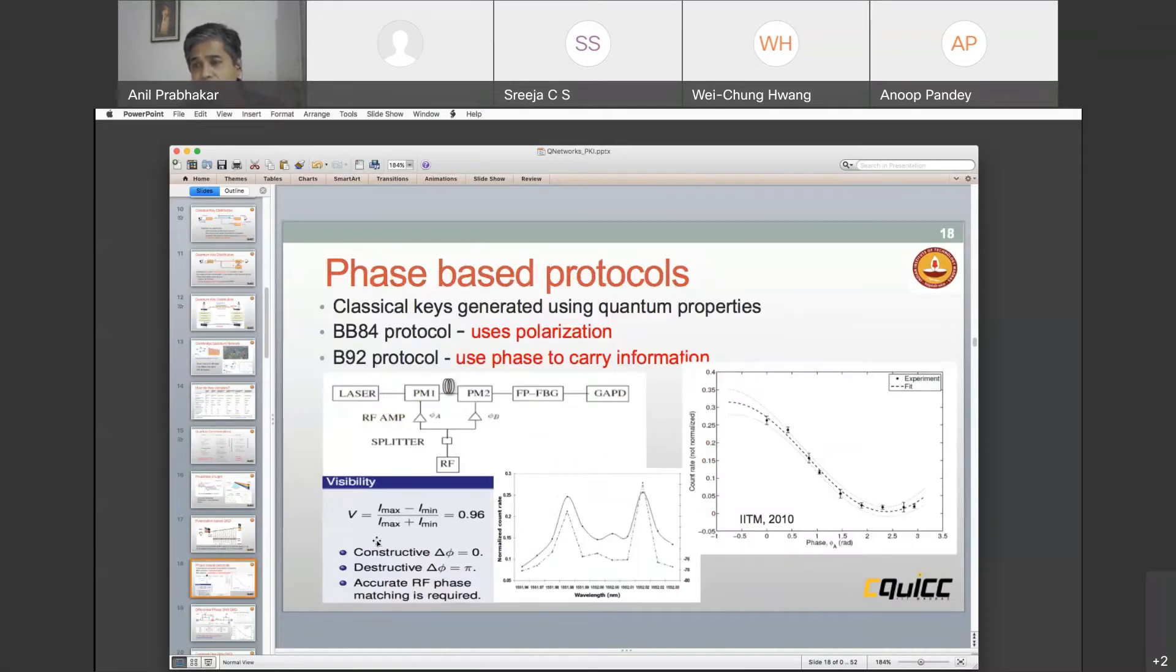Similarly, there are what are called phase-based protocols. In phase-based protocols, you have a phase modulator on the transmitter side and the phase modulator on the receiver side. If the two phases are the same, if both of them are zero and zero, then I see a signal. If zero and pi, then I don't see a signal. That is what is shown out here. Zero and zero, you'll get a maximum signal and zero and pi will get a minimum. These are very early experiments. You can see we have done this almost 11 years ago.